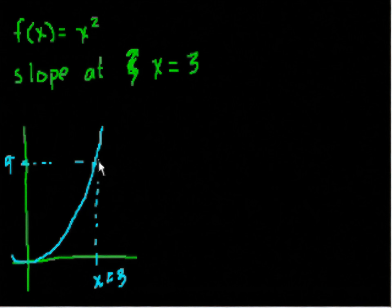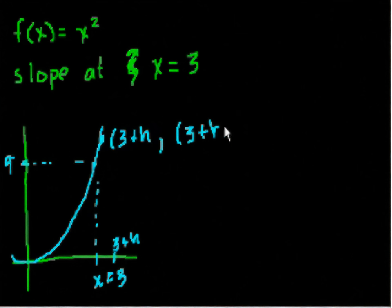So what we do is, we take a point maybe a little bit further along the curve. Let's say this point right here is 3 plus h. And I keep it abstract as h because as you know, we're going to take the limit as h approaches 0. And this point right here is 3 plus h squared, right? Because the function is f(x) is equal to x squared. So this point right here is 3 plus h, comma 3 plus h squared. And this point here is, of course, 3, 9.